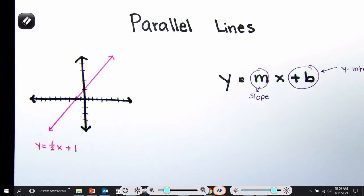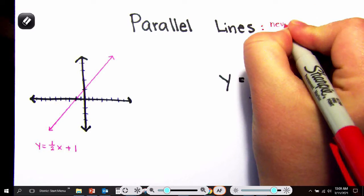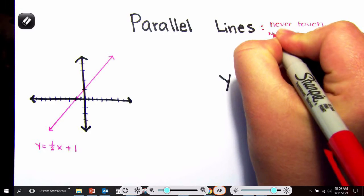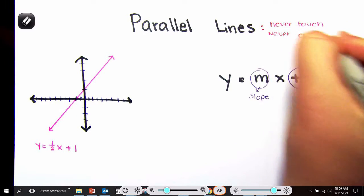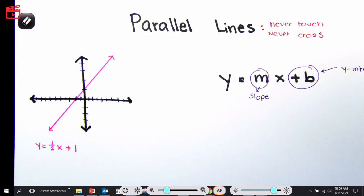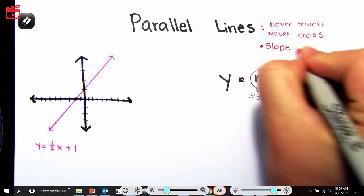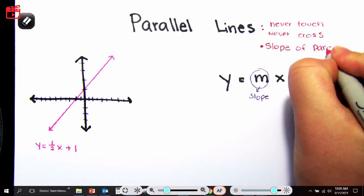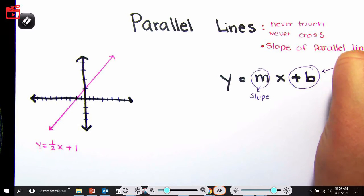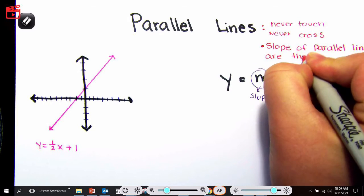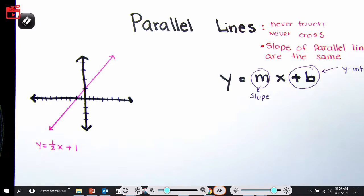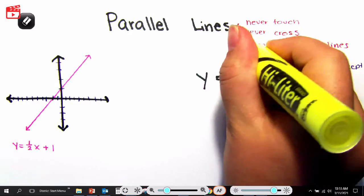So parallel lines are lines that never touch, never cross. And the reason that they never touch, never cross is because of this wonderful thing called slope. So the slope of parallel lines are the same. And that's super important to remember. The slope of parallel lines are the same.